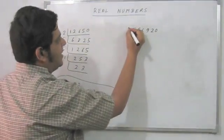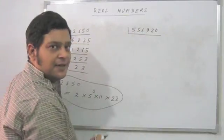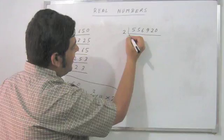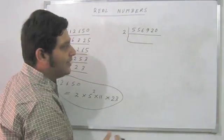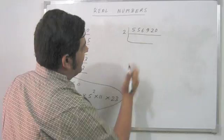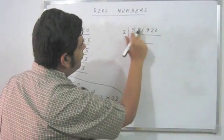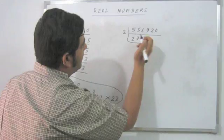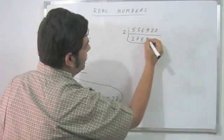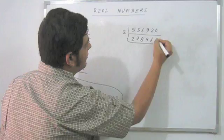Let us apply the same idea with 556920. If I divide it by 2, which it is clearly divisible, what do I get? I get 278460.